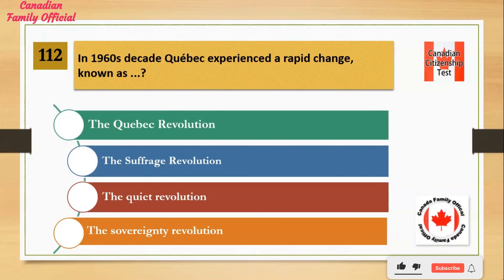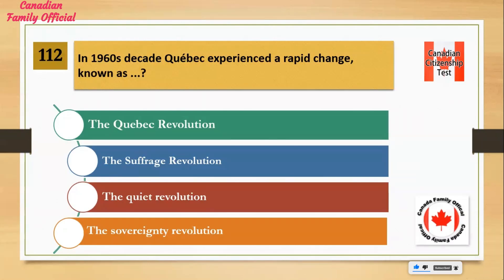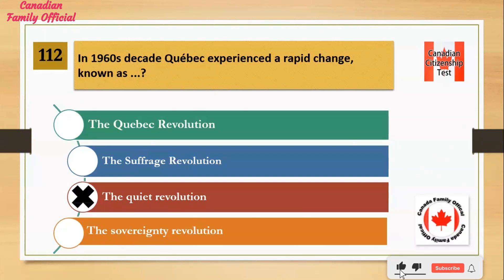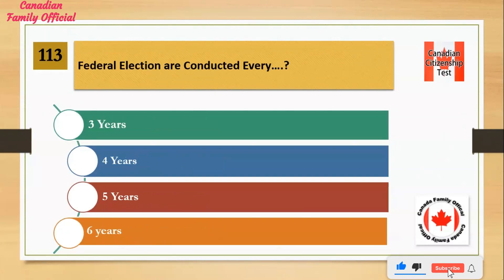In the 1960s, Quebec experienced a rapid change known as: Number 1: the Quebec Revolution. Number 2: the Suffrage Revolution. Number 3: the Quiet Revolution. Number 4: the Sovereignty Revolution. And the answer is the Quiet Revolution.